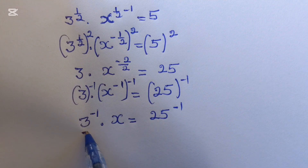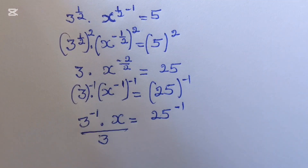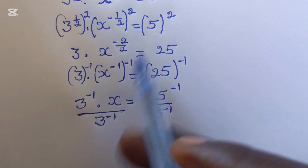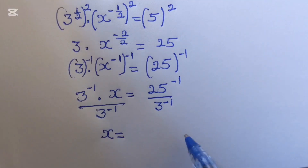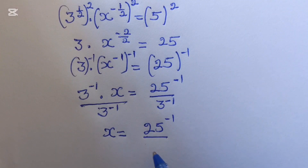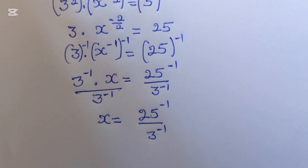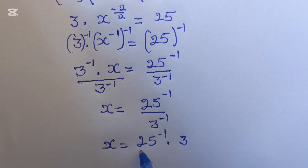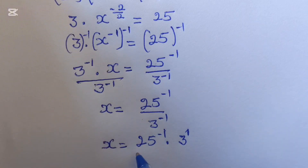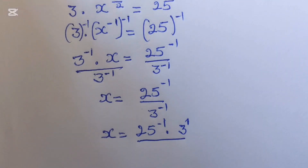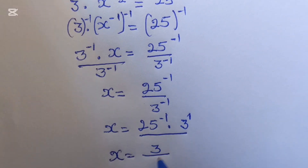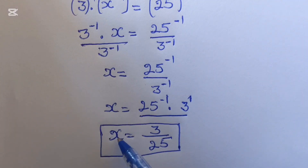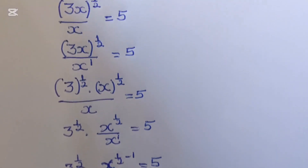So by dividing by 3^(−1) on both sides, we get x equals 25^(−1) over 3^(−1). Since 3^(−1) moves to the numerator, this becomes 25^(−1) times 3^1, which equals 3 over 25. This first method gives us one solution: x = 3/25.